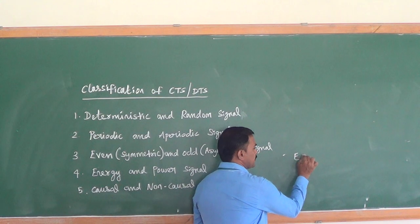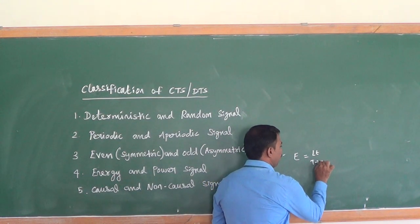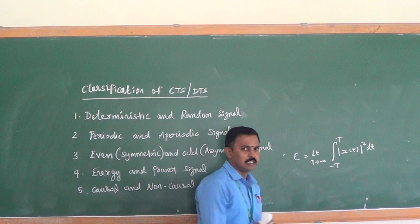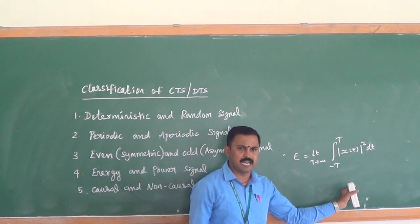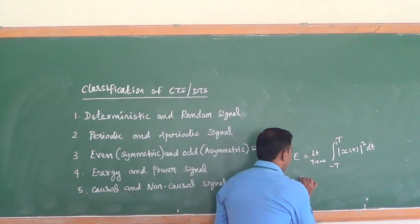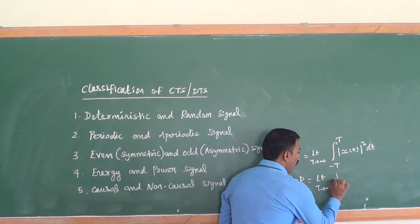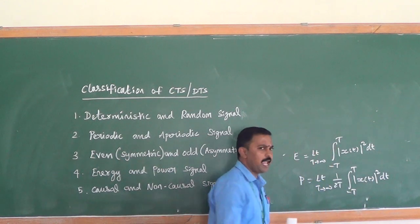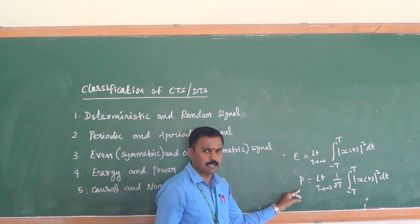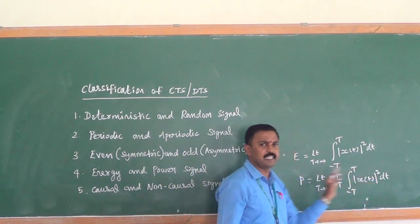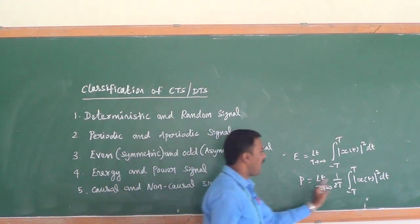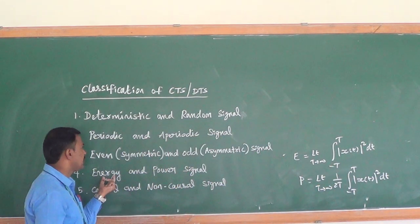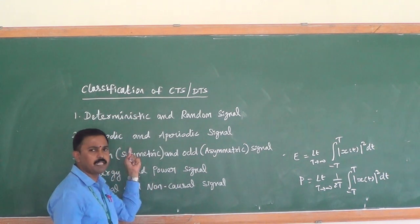The energy formula for a continuous system is: E = lim(T→∞) ∫₋ᵀᵀ |x(t)|² dt. The power formula is: P = lim(T→∞) (1/2T) ∫₋ᵀᵀ |x(t)|² dt. If energy is finite and power is zero, the signal is an energy signal. If power is finite and energy is infinite, it is a power signal. An energy signal is an example of an aperiodic signal, and a power signal is an example of a periodic signal.